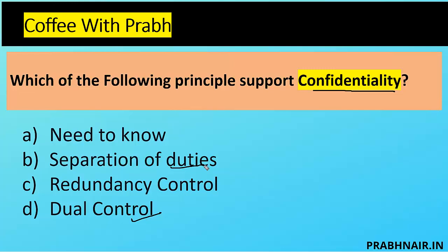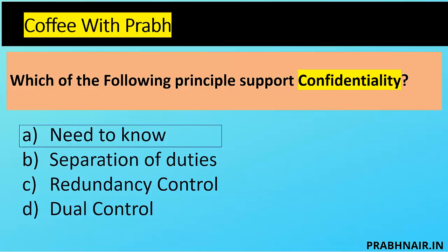Separation of duty means one person will not perform an end-to-end transaction, because if one person does the entire transaction, there is a possibility of fraud. This principle maintains the integrity of the process. Redundancy control means having a group of components working together to provide availability of services — if one component goes down, another provides the service. So redundancy achieves availability.